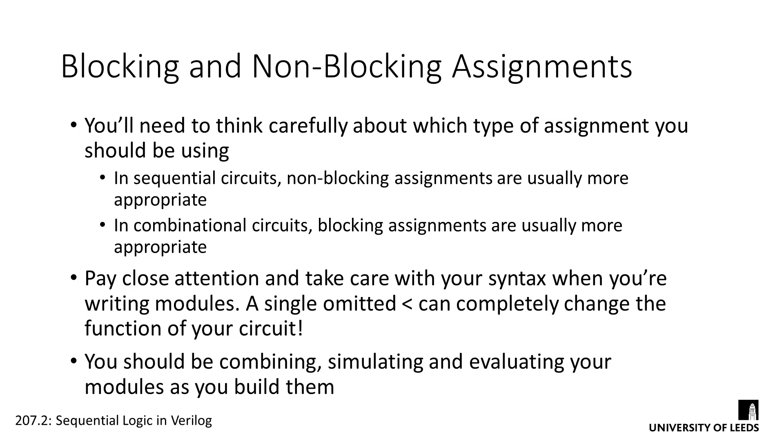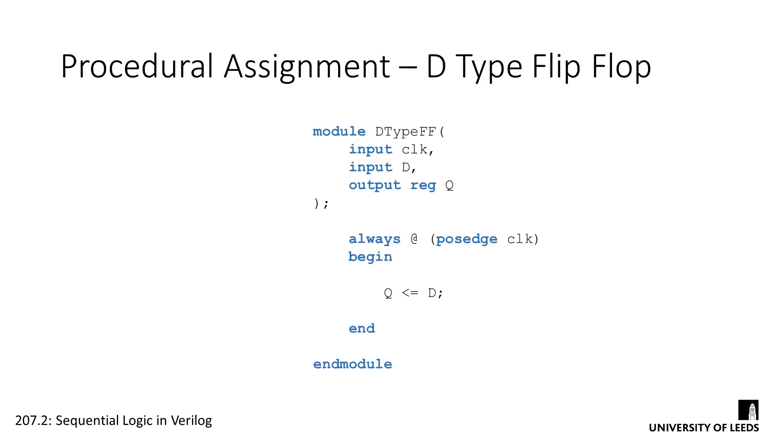Let's take a look at an example sequential logic module. The code here implements a D-type flip-flop using procedural assignment. It's very simple, there's a single always block which is triggered by the positive edge of a clock input. On each clock tick, the output register queue is set to whatever state the input D is currently at. Even though we only have one statement, we should still use a non-blocking assignment here, as it's good practice for sequential logic.